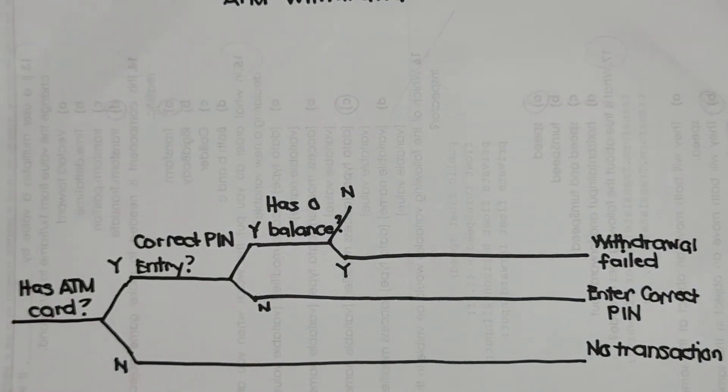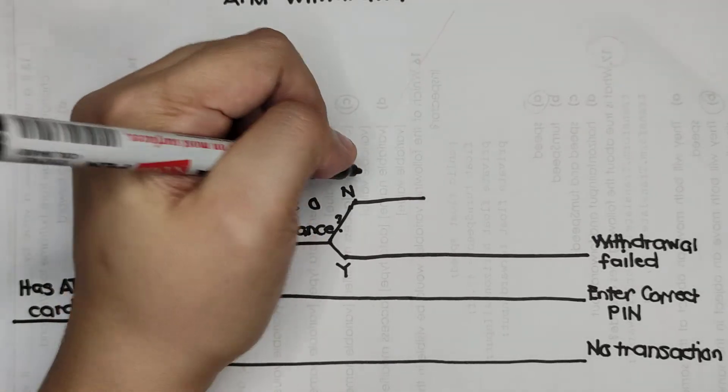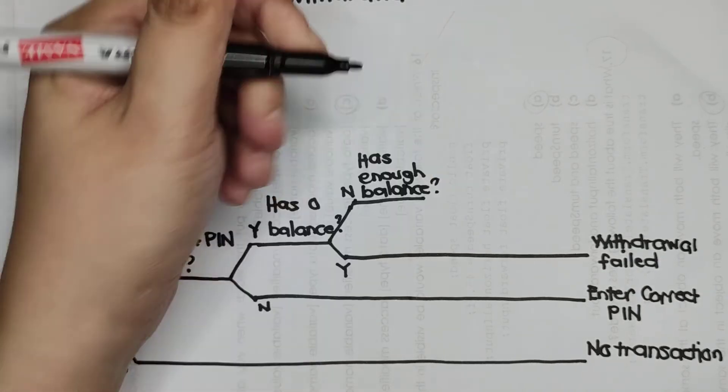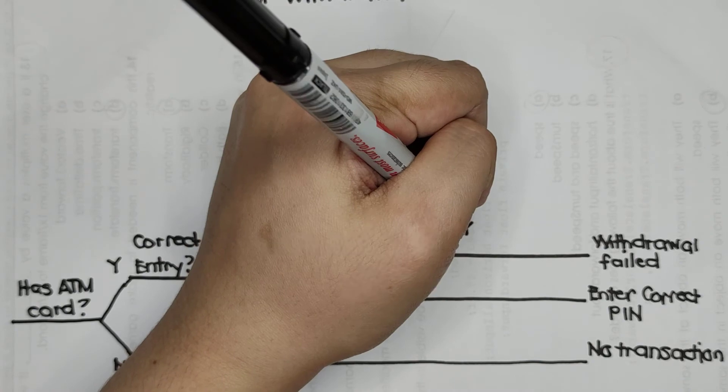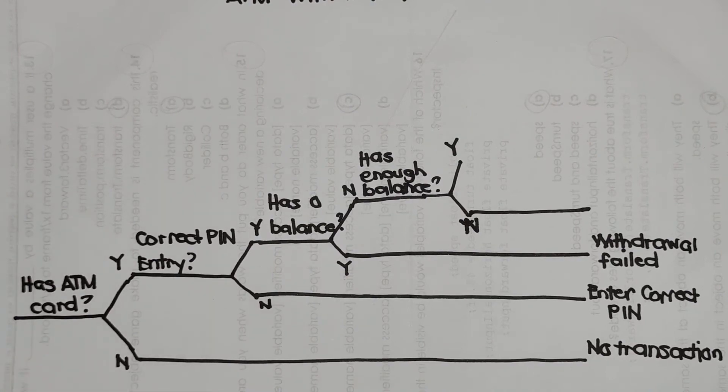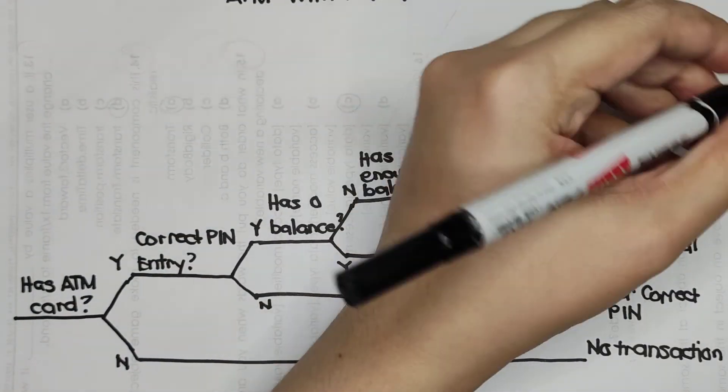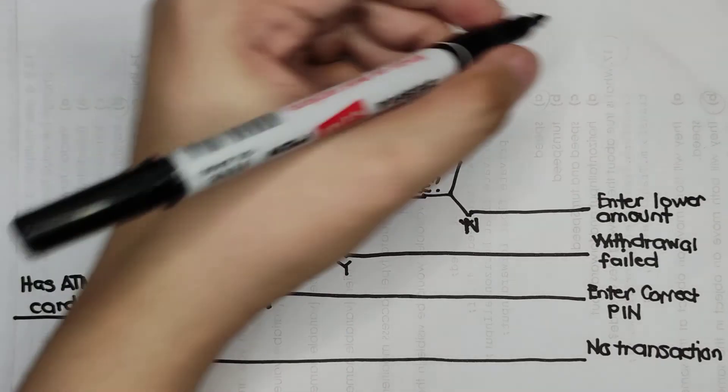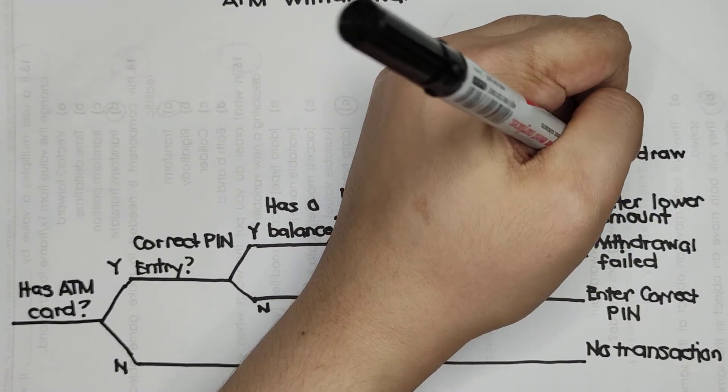The question will be: has enough balance? If it is a yes, we also have a condition for the no. For the no, has enough balance? No. So you have money, but if you want to withdraw, you should enter lower amount. And if it is a yes, then we have withdraw money.